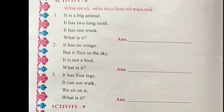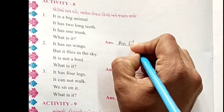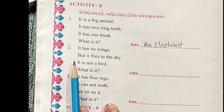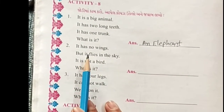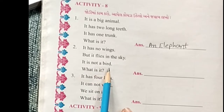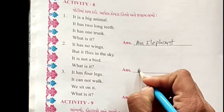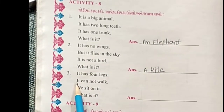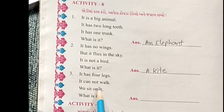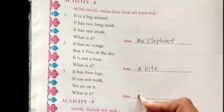What is it? One trunk — an elephant. Second, it has no wings, but it flies in the sky. It is not a bird. What is it? The answer is a kite. Third, it has four legs. It cannot walk. We sit on it. What is it? A chair.